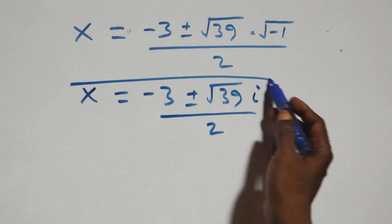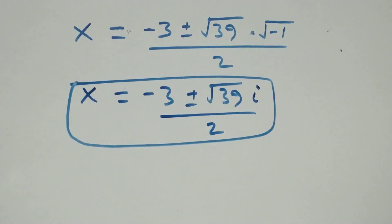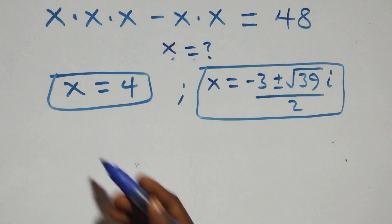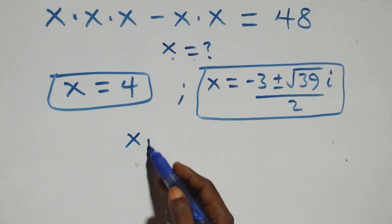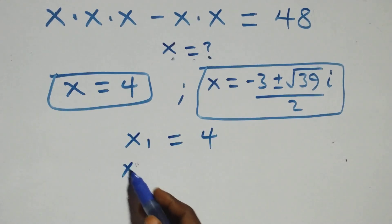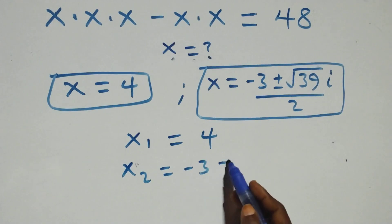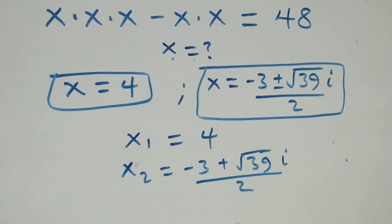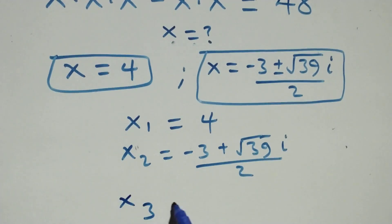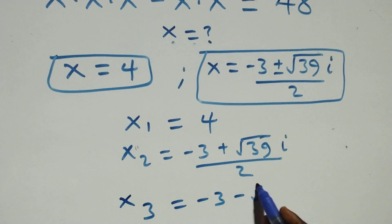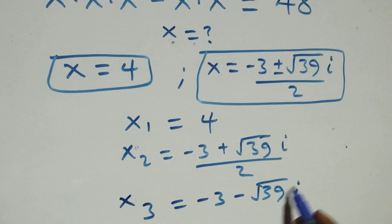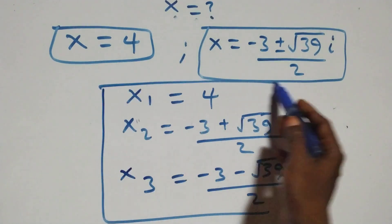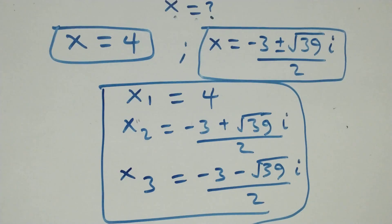We have two complex solutions from here. Therefore, altogether we have three solutions: x₁ equals to 4, x₂ equals to (minus 3 plus root(39)·i) over 2, and x₃ equals to (minus 3 minus root(39)·i) over 2. This gives us one real and two complex solutions.